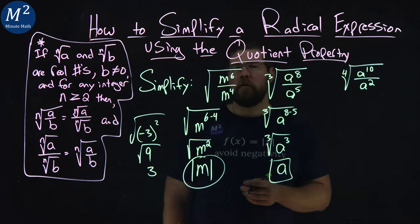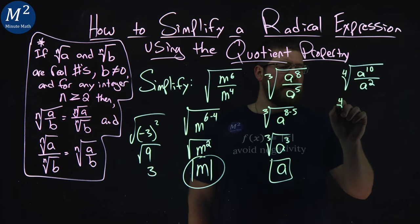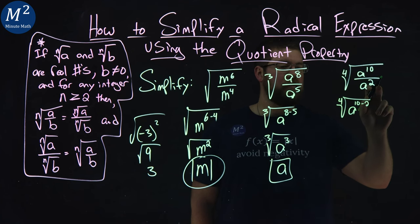Last one, fourth power, always a little more difficult. Let's see what we can do. Let's subtract, again, the exponents: a to the ten minus two power here. Again, ten minus two. We're left with the fourth root of a to the eighth.